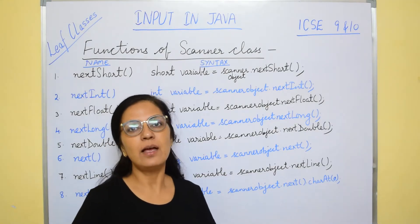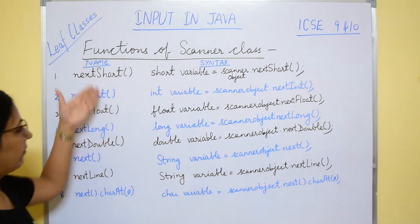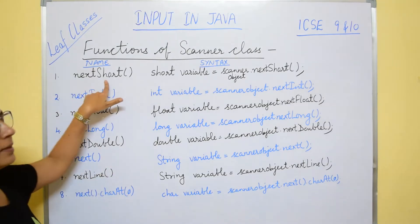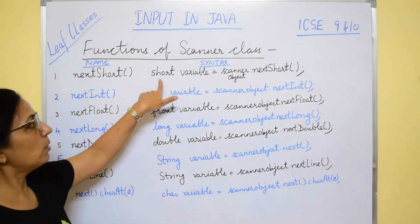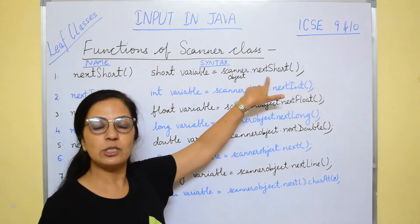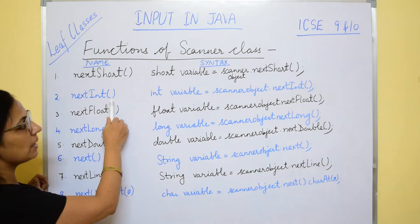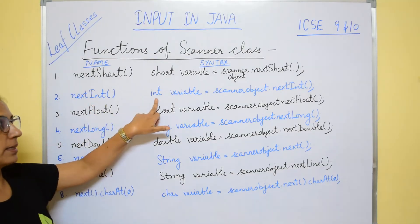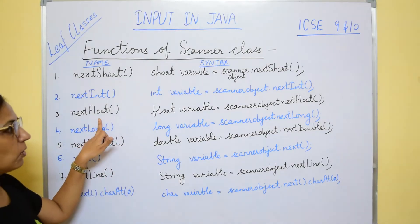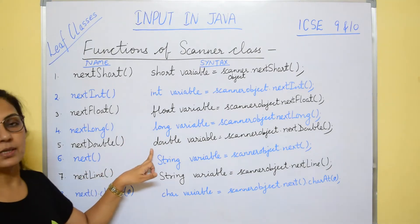Here is the list of functions we use to input values in Java. Different data types have different functions. The first column is the function name and the second shows the syntax. First is nextShort — used to input a short type value; syntax: short variable = scannerObject.nextShort(). Similarly, nextInt inputs int type values. The syntax is: int variable = scannerObject.nextInt(). Then we have nextFloat for float, nextLong for long, and nextDouble for double type values.